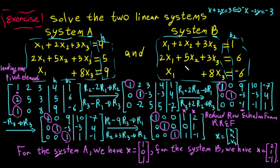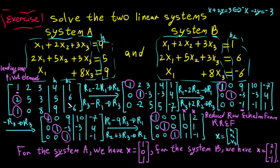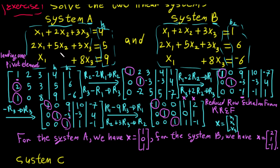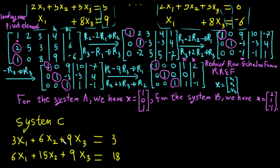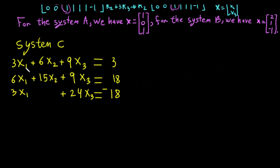In the previous video we solved two systems. In this video we add another system. When we solved those two systems we put them in an augmented matrix because they had the same coefficients, but here the coefficients are not the same. However, we notice that this system has a common factor of 3.